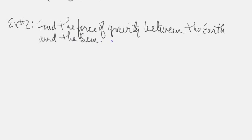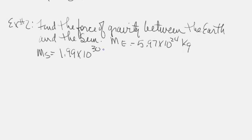The mass of the earth is equal to 5.97 times 10 to the 24th kilograms. The mass of the sun is 1.99 times 10 to the 30th kilograms.